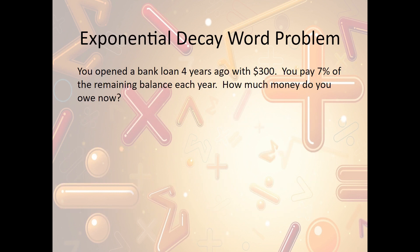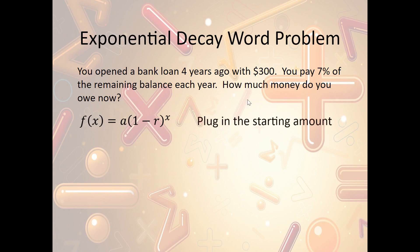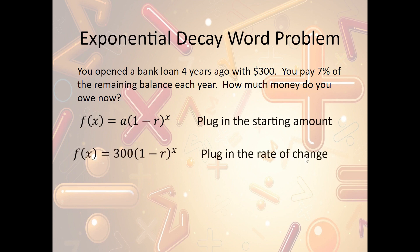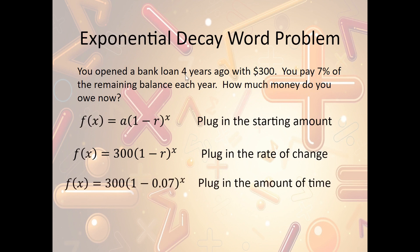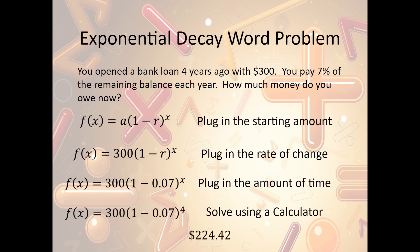Let's look at one more exponential decay word problem. You opened a bank loan four years ago with $300 and pay 7% of the remaining balance each year. How much money do you owe now? It's decay because the amount owed is going down. Using f(x) = a · (1 − r)ˣ: a = $300, r = 7% = 0.07, x = 4 years. Plugging into a calculator, we get that now we owe $224.42.